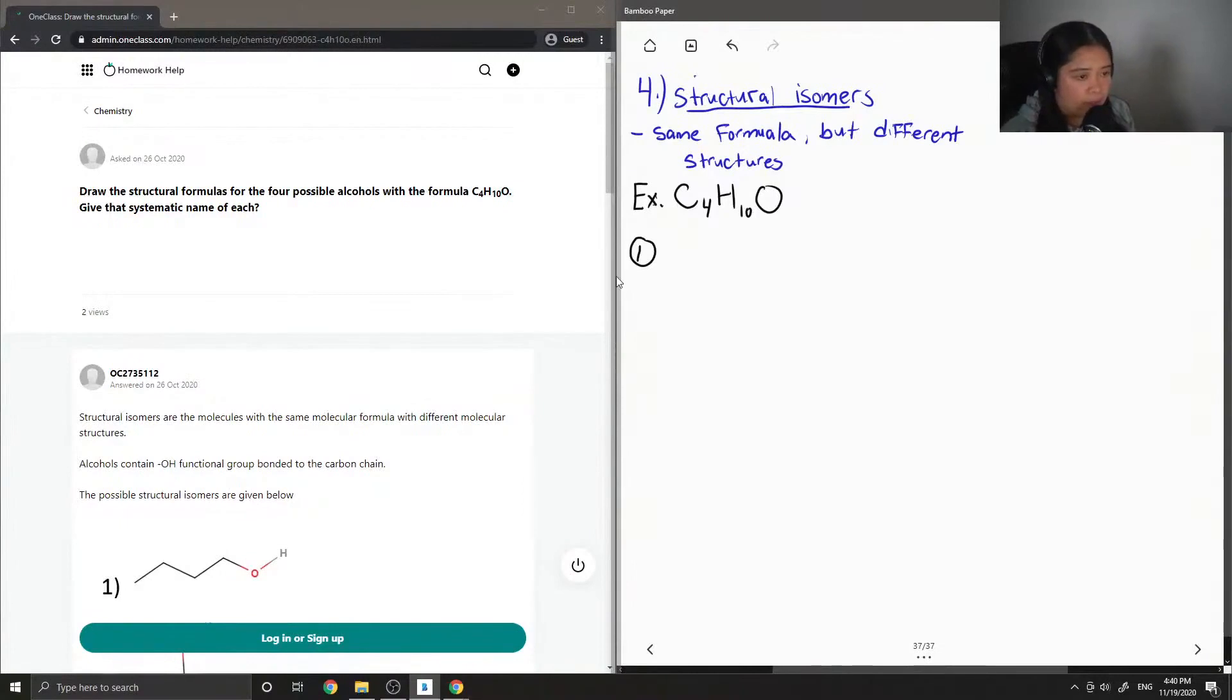First, I'll write out my four carbons. Let's say we had the alcohol group at the end, I'll fill in the rest with hydrogens. Then we can double check if all the numbers add up. There are four carbons, and four plus six makes ten hydrogens, and one oxygen. So this is one example of the structural isomers we could get.